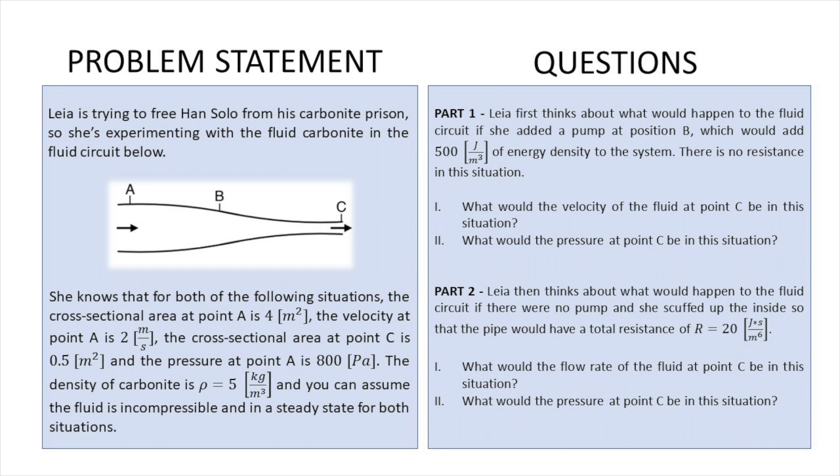She knows that for both of the following situations the cross-sectional area at point A is 4 square meters, the velocity at point A is 2 meters per second, cross-sectional area at point C is 0.5 square meters, and the pressure at point A is 800 pascals. The density of carbonite is equal to 5 kilograms per meter cubed, and you can assume that the fluid is incompressible and in a steady state for both situations.